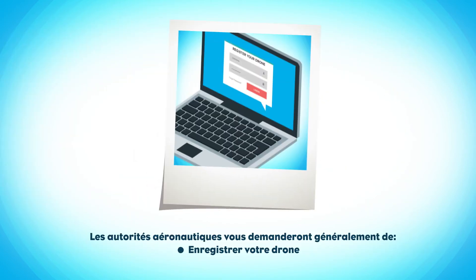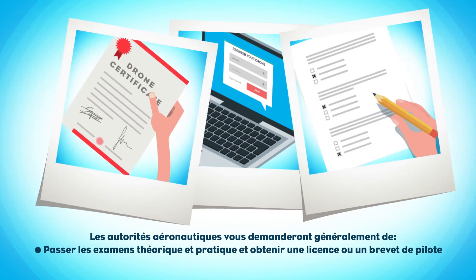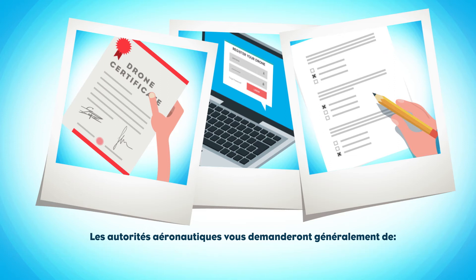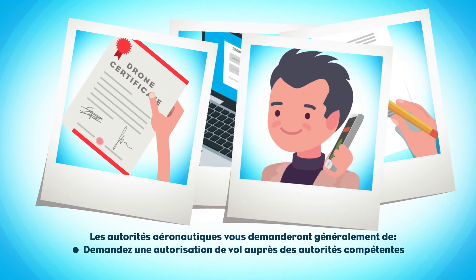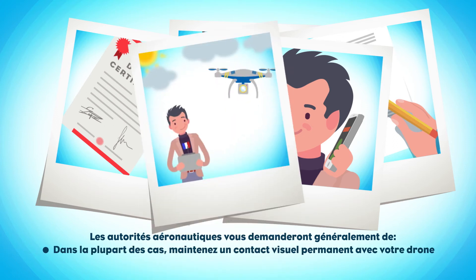Aviation authorities will typically request that you register your drone, pass theoretical and practical exams, and obtain a pilot licence or certificate. You may also need to request flying authorisation from competent authorities. In most cases, you should maintain visual contact with your drone at all times.